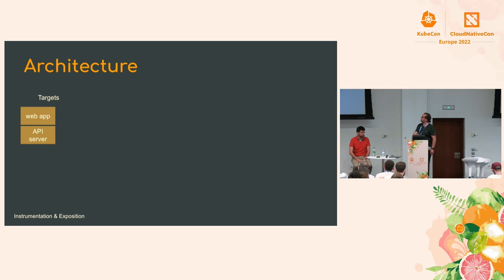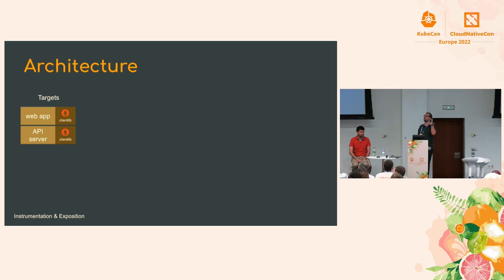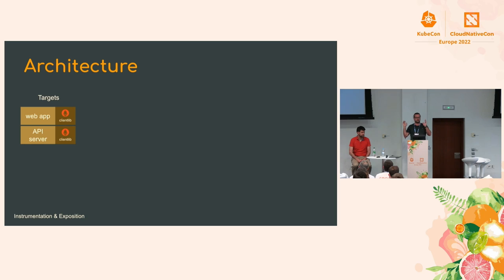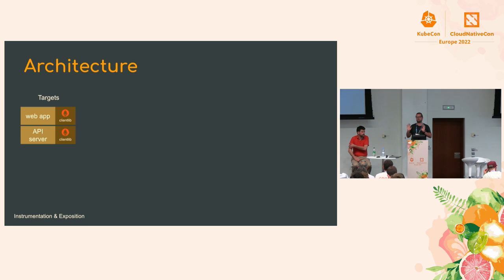Prometheus is a pull-based system, so everything starts with your web app or API server. You add one of the client libraries to instrument your application — we have one in almost any language, and if we don't, someone else has built it. You can also build your own; the output format is really not that difficult. The instrumentation in the client is very lightweight because your application doesn't put anything on the network at the point of an event happening. All we're doing is incrementing some numbers in memory, so it's blazing fast on the hot path of your application.